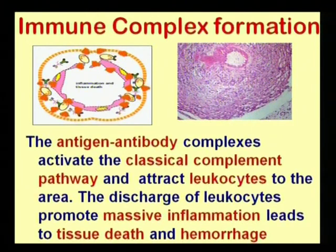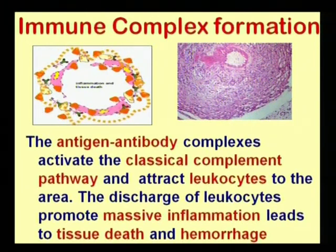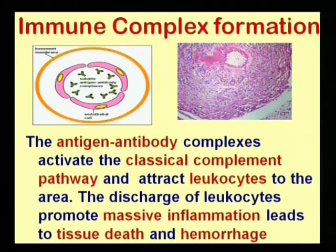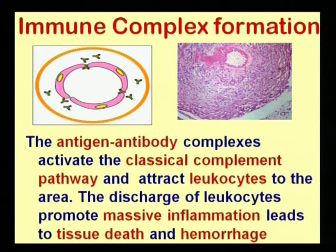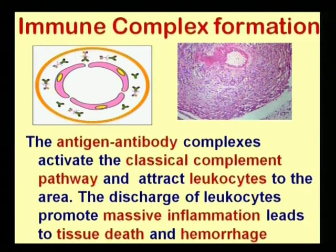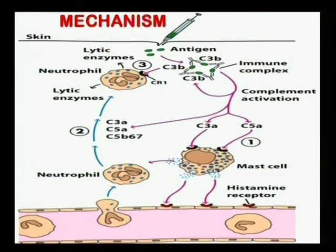The components of immune complex formation include soluble antigen, antibody both in higher concentrations, as well as leukocytes and complement systems. When antigen is introduced into the skin, it activates complement. The activated complement components also degranulate mast cells and basophils present in the circulatory system or at the site of immune complex deposition.